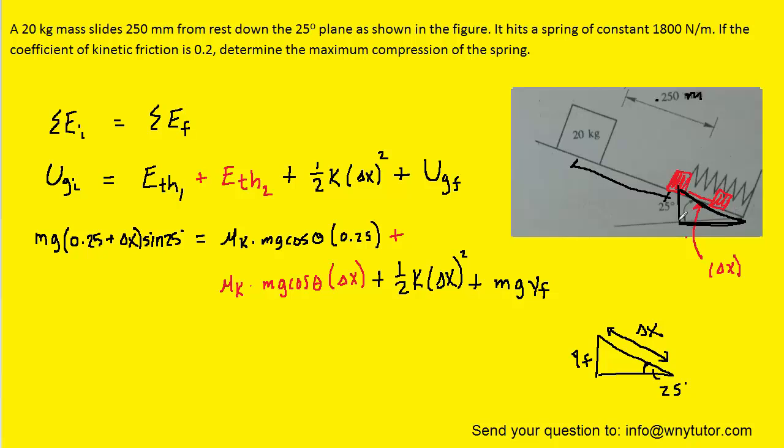Here's the 25 degree angle. And the distance would be the hypotenuse of this right triangle. And so that would be our delta x. And that's what we've labeled right here on this triangle.